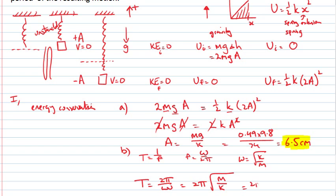So 2π times the square root of 0.49 divided by 74, and that period is actually equal to half a second.